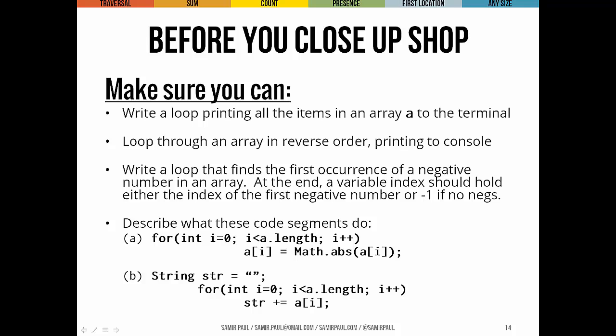Big things before you close up shop. Make sure you can write a loop that prints all the items of an array. Make sure you can do it backward, too. So printing all the elements in reverse order. Make sure you can write some code that finds the first occurrence of a negative number in the array, or negative 1 if there are no negative numbers. And read these code segments. Make sure you can translate or identify what they do. Make sure you can describe it in English.